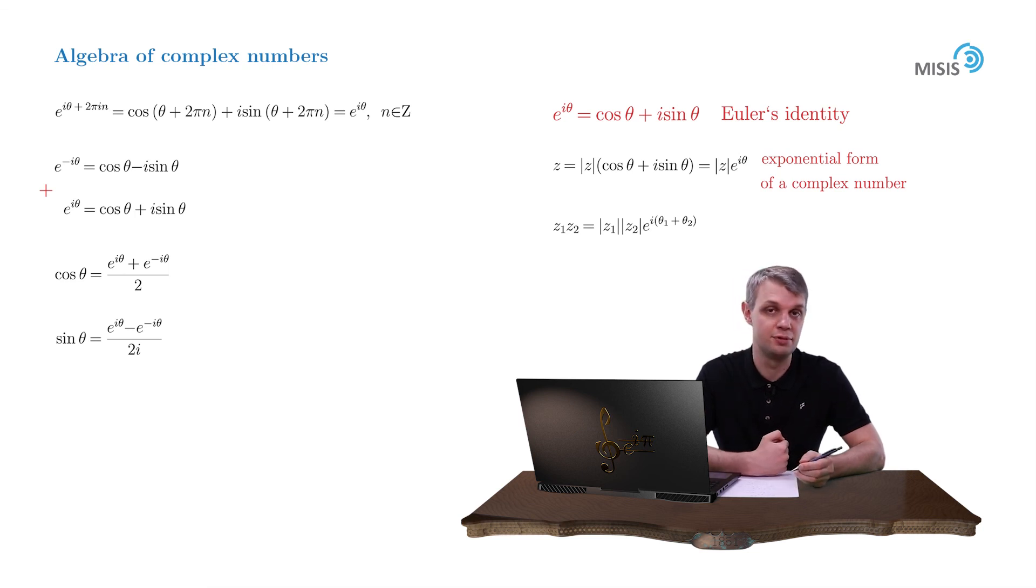And of course, the same simple rules are applied to hyperbolic trigonometric functions. We see that cosine hyperbolic of i theta simply coincides with cosine theta, while sine hyperbolic of i theta is equal to sine theta over i.